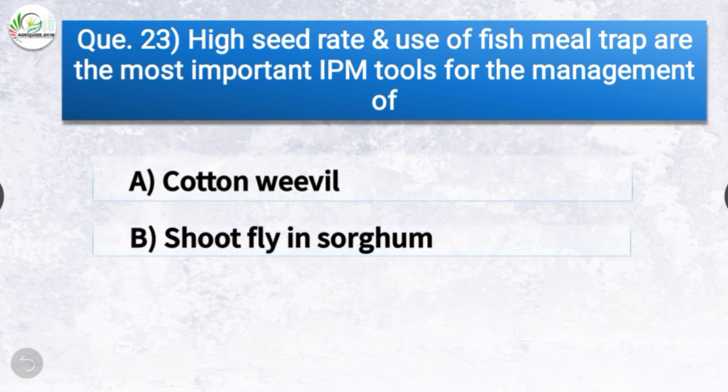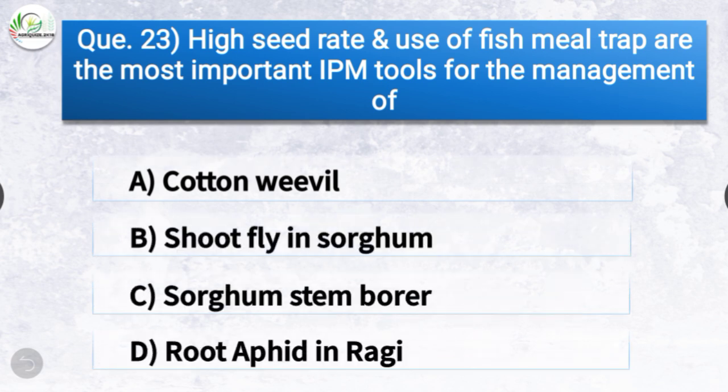Question number twenty-three: High seed rate and use of fish meal trap are the most important IPM tools for the management of? The options are cotton weevil, shoot fly in sorghum, sorghum stem borer, or root aphid in ragi. The correct answer is option B, shoot fly in sorghum — high seed rate and use of fish meal trap are most important IPM tools for management of shoot fly in sorghum.